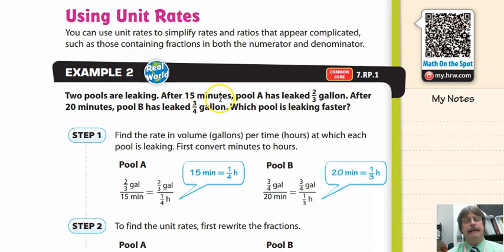Do a comparison between pool A and pool B. 15 minutes is a quarter hour. They take the two-thirds of a gallon, take the 15 minutes and put it into a quarter because 15 minutes is a quarter of an hour. They have it set up as a complex fraction. Then they do the same thing with pool B. It's leaking at three-quarters gallon at a rate of 20 minutes. 20 minutes is one-third of an hour. Now we have like terms that we can use.